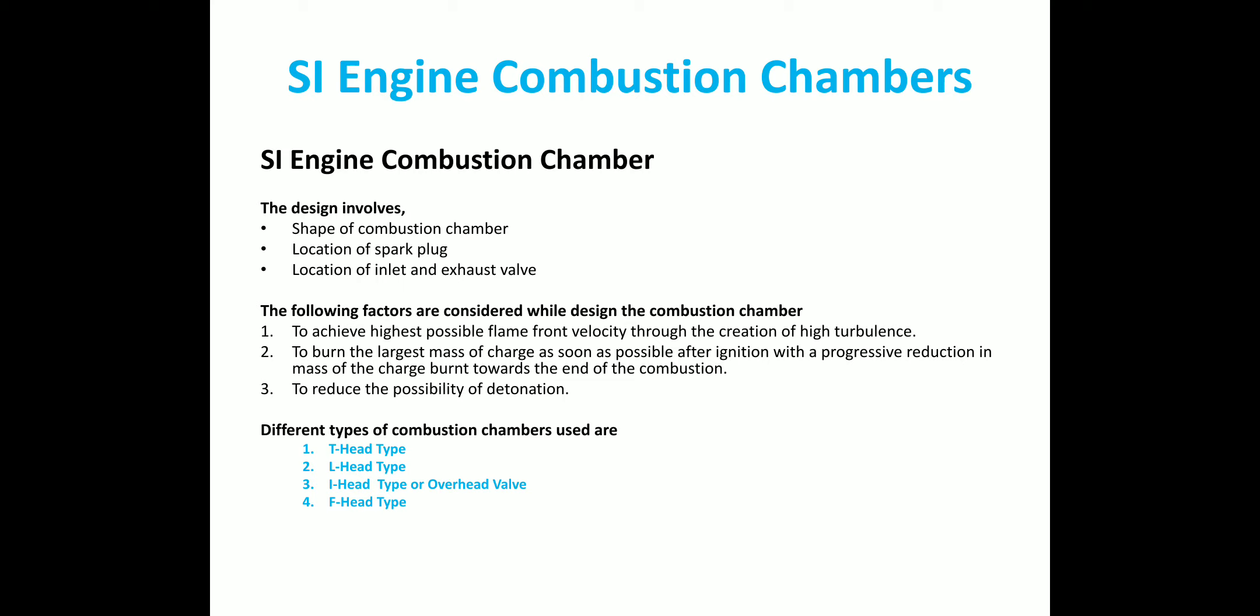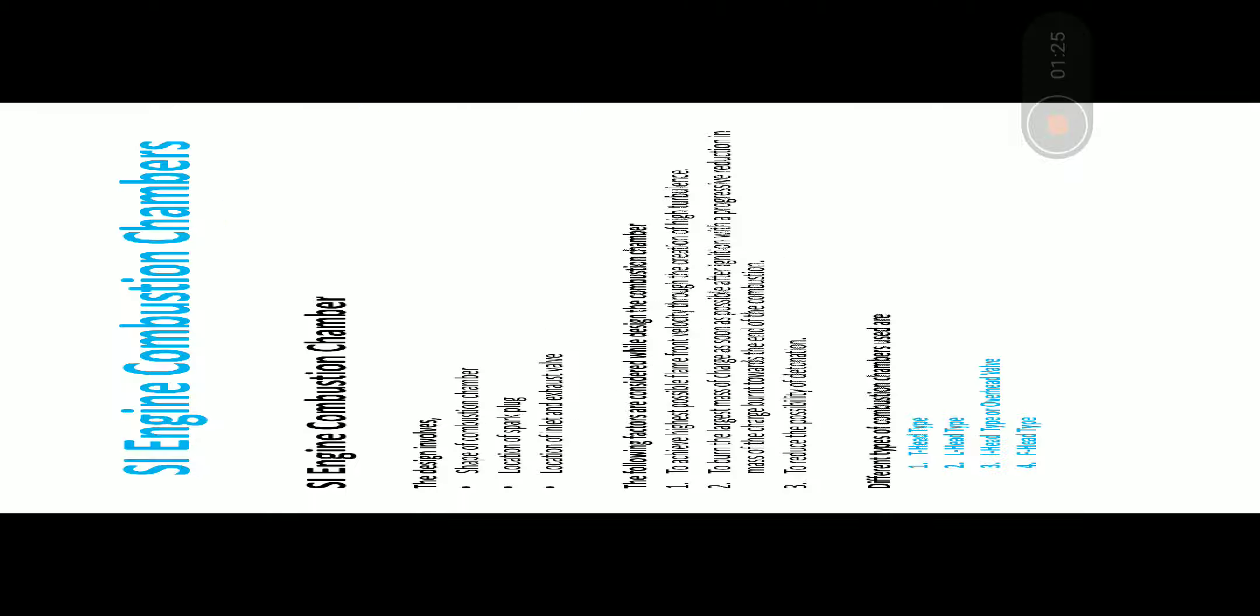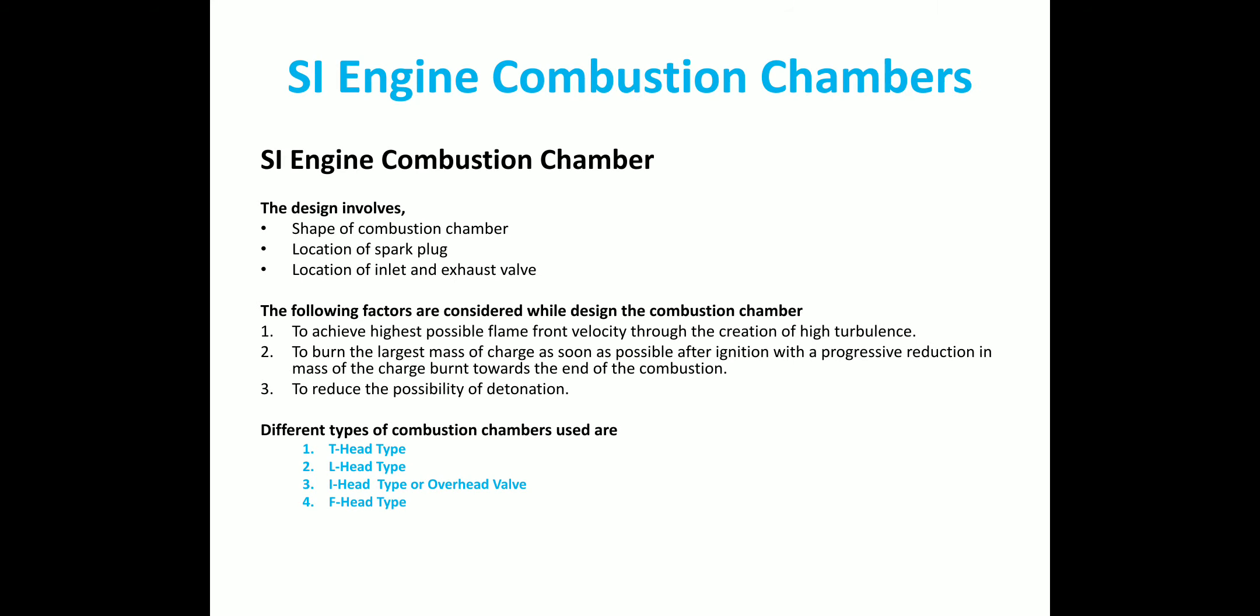The first one is to achieve highest possible flame front velocity through the creation of high turbulence. High turbulence should be created so that the flame can propagate and burn all the charges. And the second one is to burn the largest mass of charge as soon as possible after ignition with a progressive reduction in mass of the charge burned towards the end of combustion. And one more is to reduce the possibility of detonation. So these are the different factors to be considered while designing the combustion chamber in SI engine.